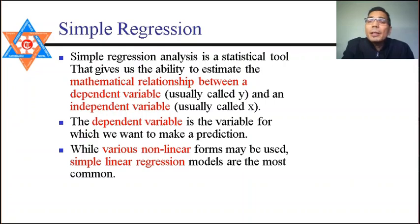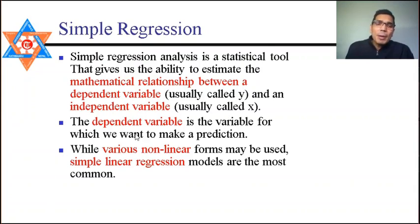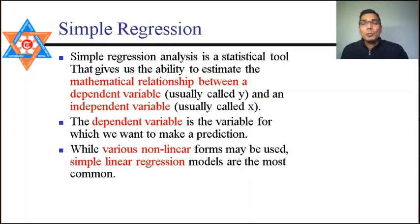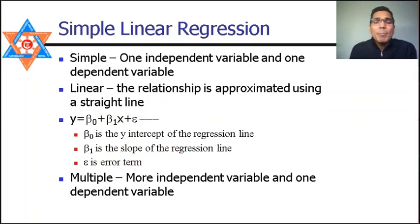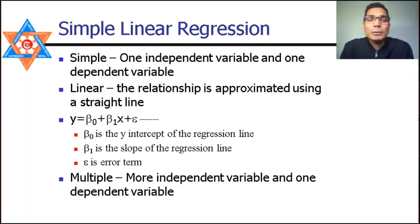The dependent variable is usually denoted by y, whereas the independent variable is denoted by x. The dependent variable is a variable used for predicting unknown values. There are various non-linear regressions, but here we study simple linear regression, where 'linear' means we approximate the relationship using a straight line.